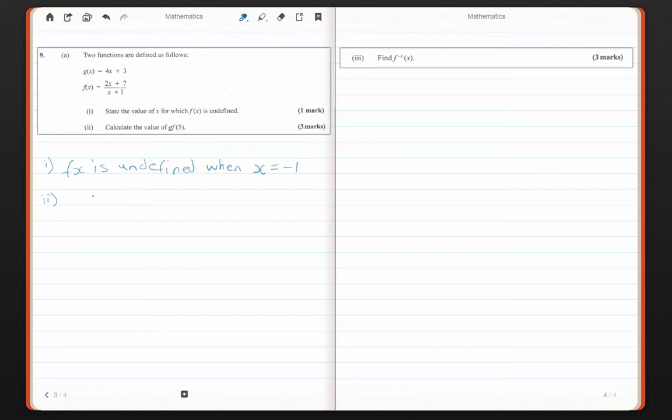Let's calculate the value of g f of 5. So we have a composition of two functions g f of 5. This can be done simply by breaking the question into two steps. The first step would be to work out f of 5.